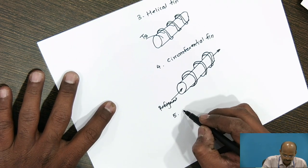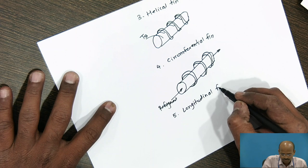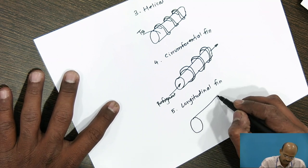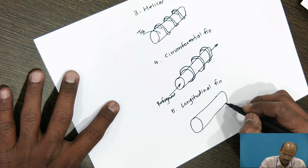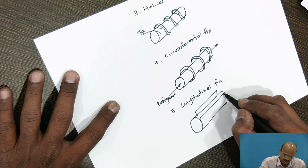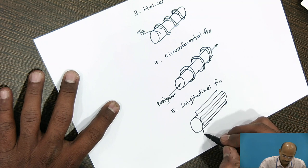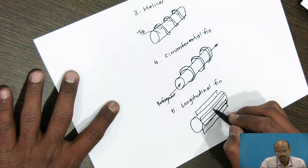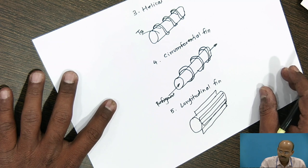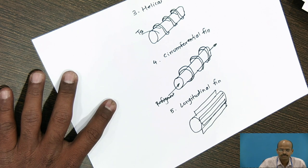In the fifth type of fin, we are calling it as a longitudinal fin. On this cylindrical surface, longitudinal fins are connected. These are the longitudinal fins. So, we can occupy the complete circumference of the cylinder. So, these are the types of the fins.